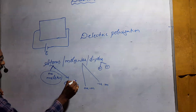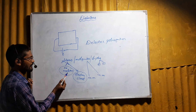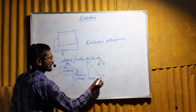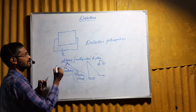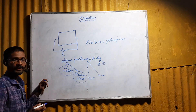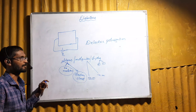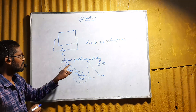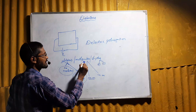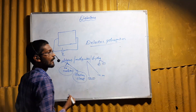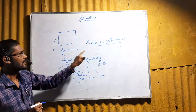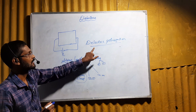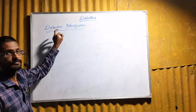When you apply some electric field to dielectric materials, there will be displacement of charge particles. In atoms, the nucleus and electron cloud will be displaced in opposite directions. In molecules, the positive and negative ions will be displaced. In dipoles, there will be a change in orientation. This displacement of charges in dielectric materials is called dielectric polarization.